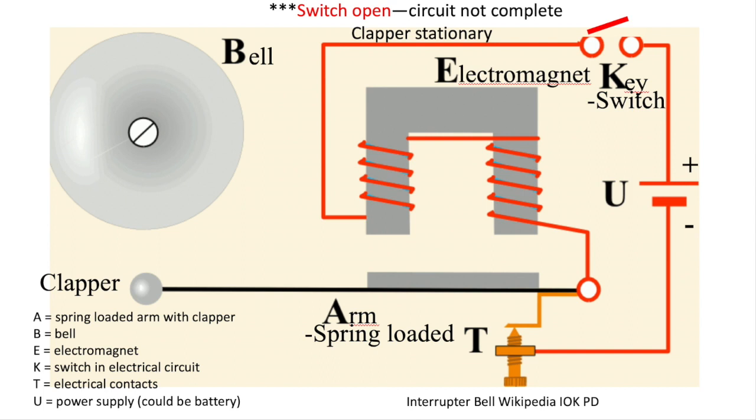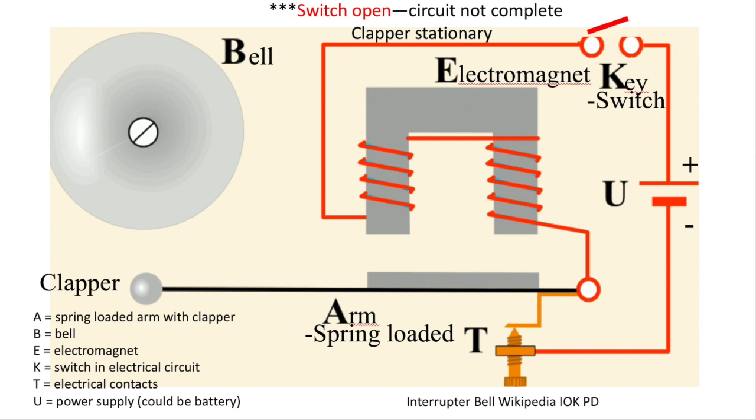Here the switch is open—no electricity even though the electrical contact is in place. The circuit isn't complete with the switch open. With the switch closed, you're going to get a complete circuit.